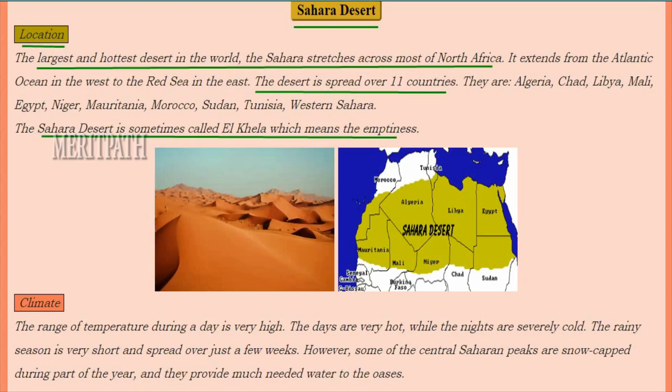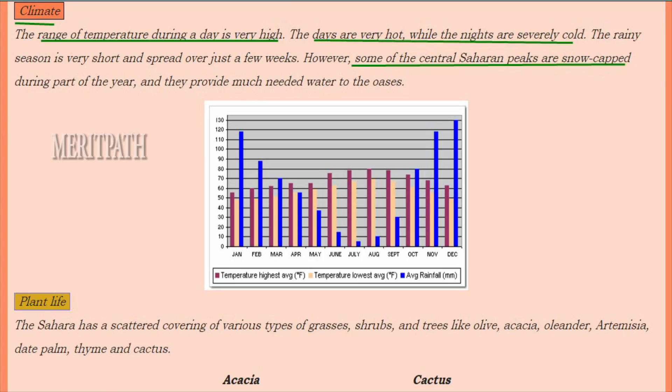The Sahara Desert is also known as El Khela, which means emptiness. As for climate, the range of temperature during the day is high — days are very hot and nights are severely cold. Rainfall is short, lasting only a few weeks. The central Saharan peaks are sometimes snow-capped during parts of the year, providing much-needed water to the oases.